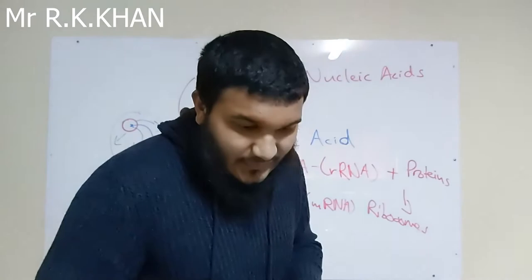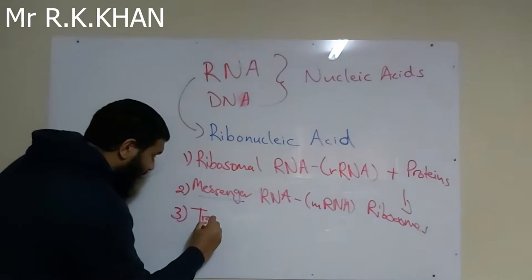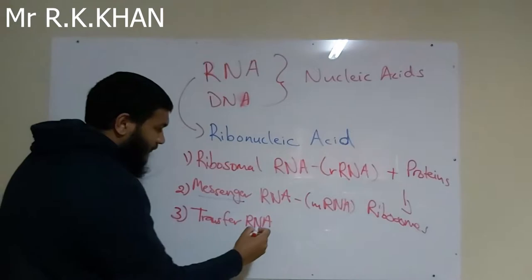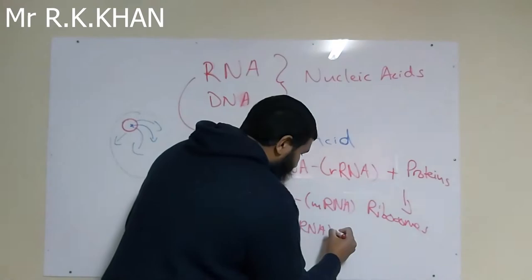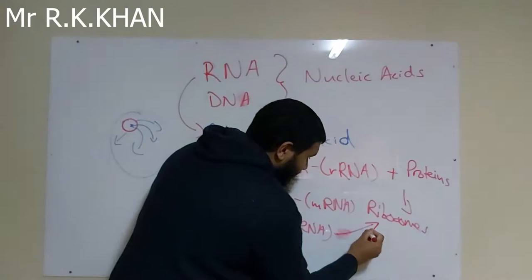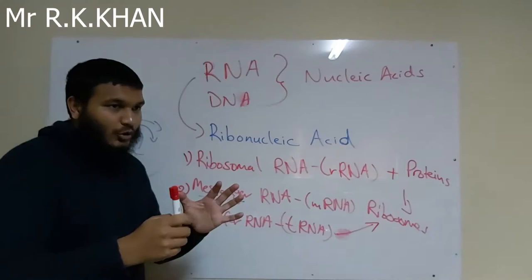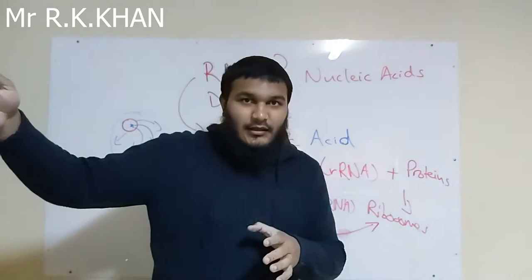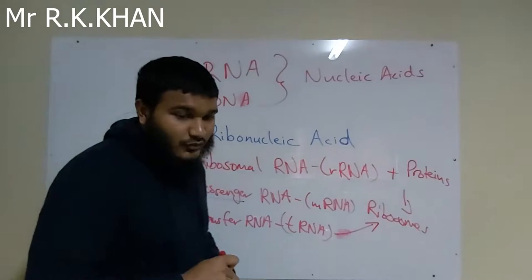The third type is transfer RNA, or tRNA. tRNA also plays a role in protein synthesis, and therefore has something to do with ribosomes. I won't go into much detail now because we are going to cover protein synthesis in later videos — this is just scratching the surface of these ribonucleic acids.